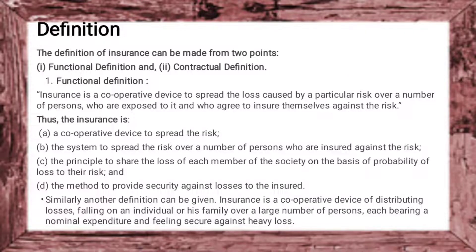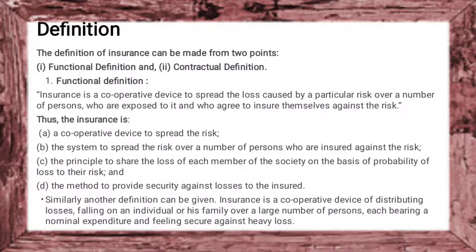Similarly, another functional definition: insurance is a cooperative device of distributing losses falling on an individual or his family over a large number of persons, each bearing a nominal expenditure and feeling secure against heavy losses. The functions of insurance include: cooperative device, spreading the risk, gathering a number of persons, sharing losses among insured persons, and providing security against loss through compensation.